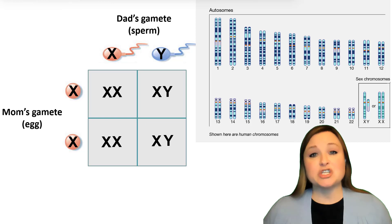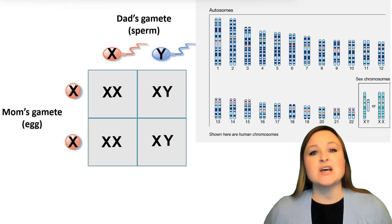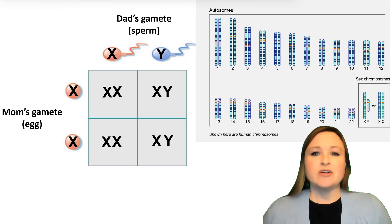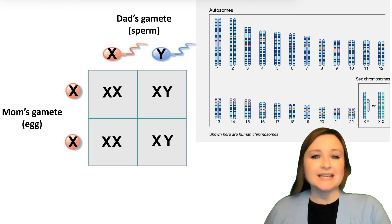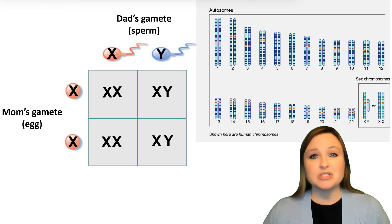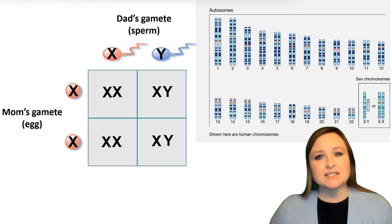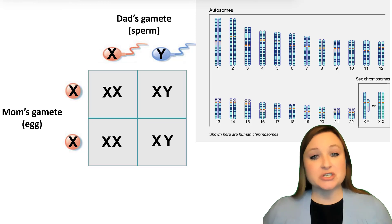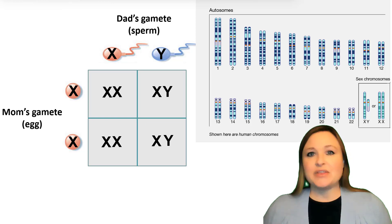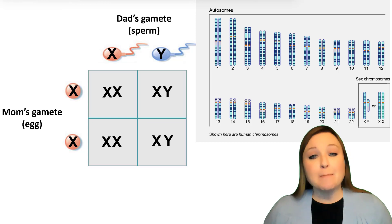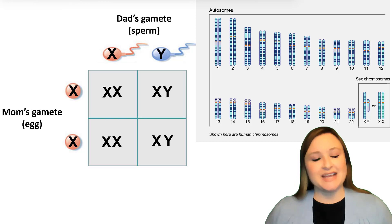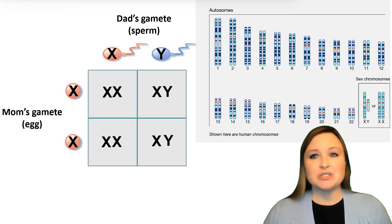Now the X chromosome is a rather large chromosome — there are about 2,000 genes found on the X chromosome. And remember, most of those X-linked genes are non-sexual traits, because the X chromosome isn't just associated with being female. Everybody, whether male or female, will have at least one X chromosome, and there are many important genes found on the X chromosome. So both males and females need those genes on the X chromosome.